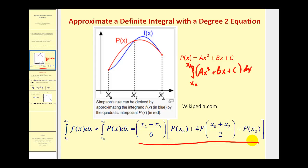Just as with the trapezoidal rule, we have a value out front — in this case, the width of two intervals divided by six. Notice inside the brackets, the coefficients are one, four, and one. So what's going to happen is when we start summing the area under multiple parabolas, the next parabola is going to share this common endpoint. Let's go ahead and take a look at the formula for Simpson's Rule.